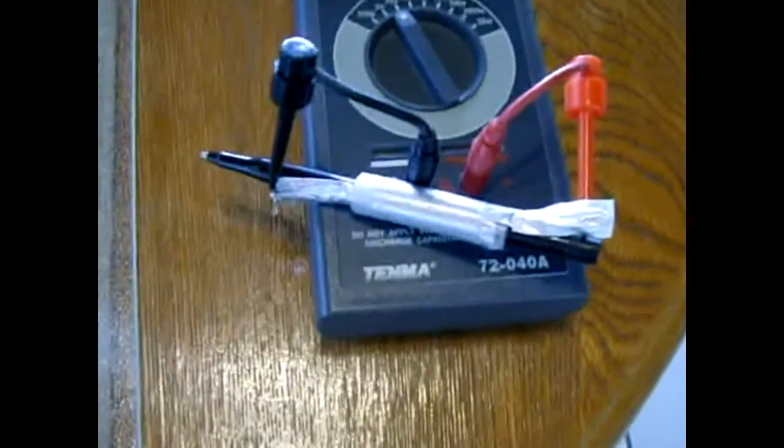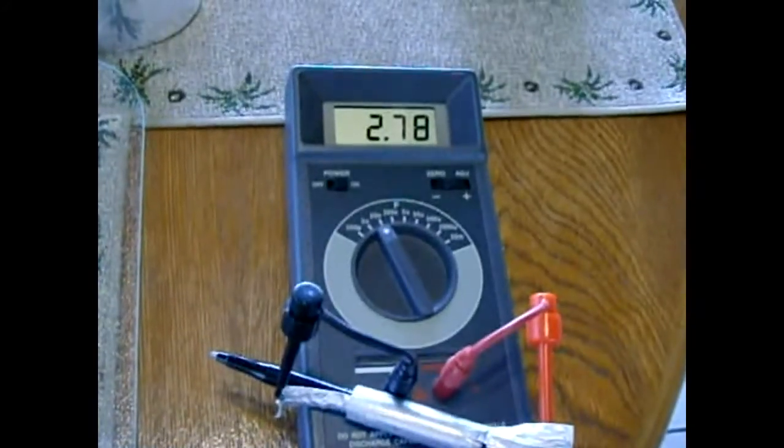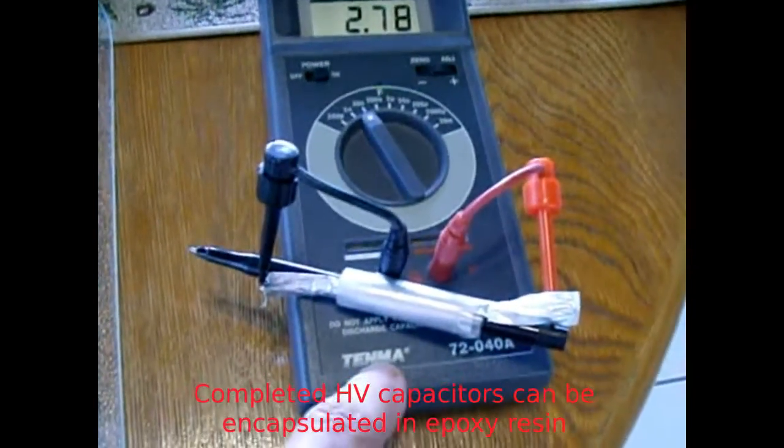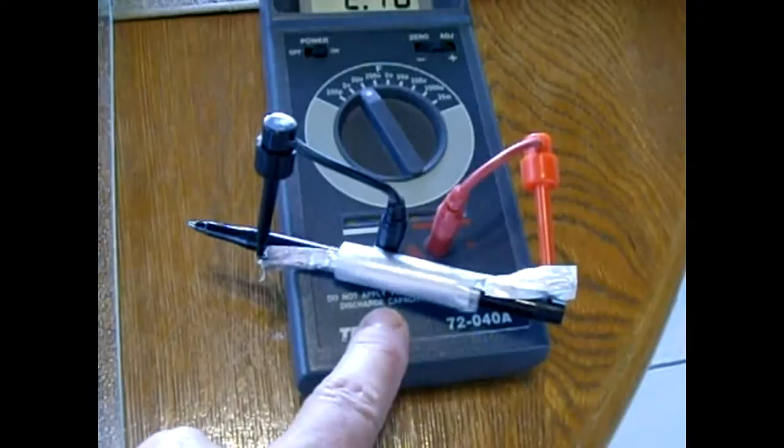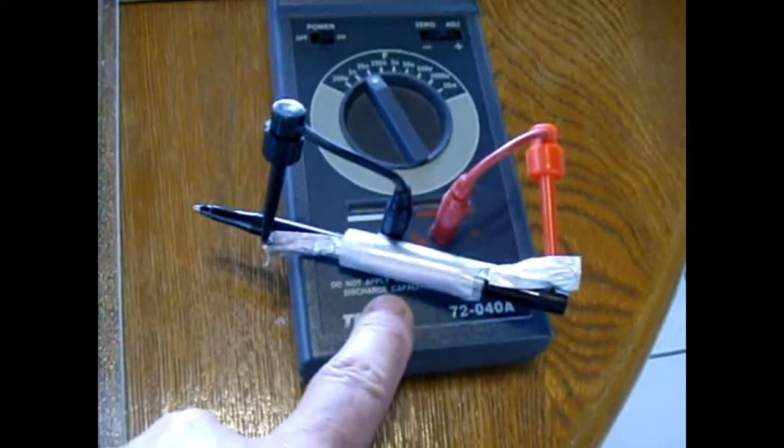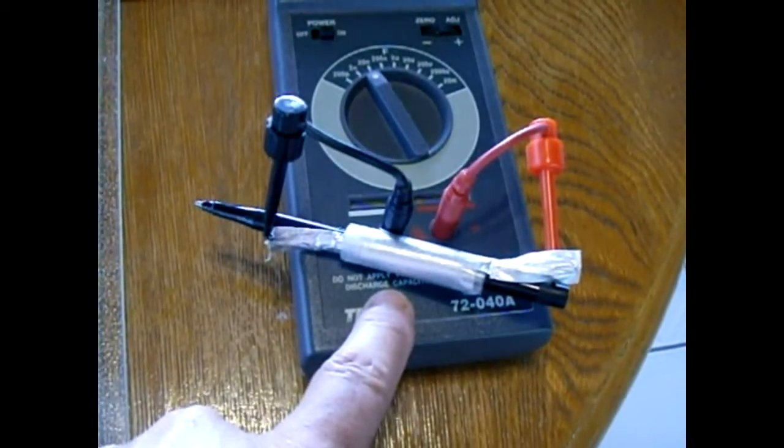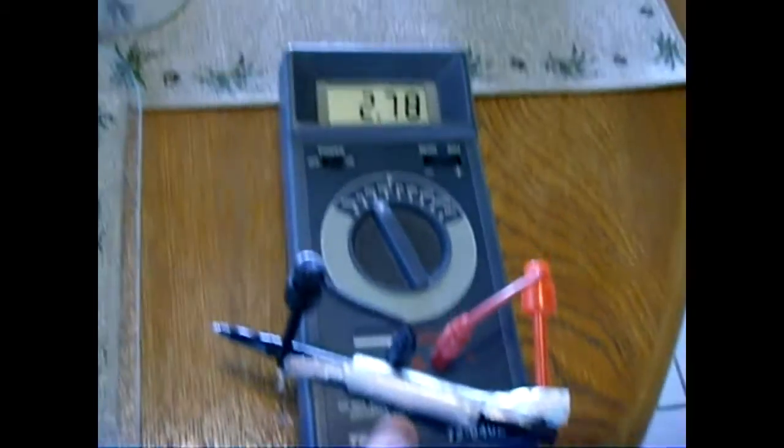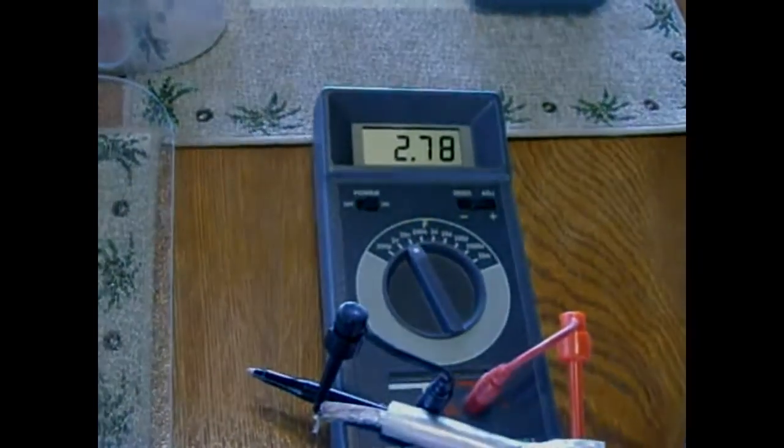So this small rolled up one is 2.78 nanofarads. If you'd like to get the value higher than 2.78, it's very simple - you don't have to change the dielectric, that would affect the voltage rating. You would simply make the strip much longer. Twice as long should yield around 5.5 to 5.6 nanofarads.